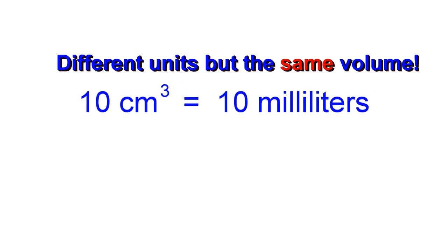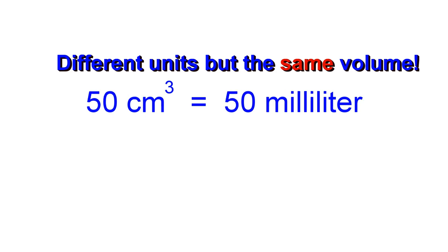So if you have a volume of 10 cubic centimeters, it will be equal to a volume of 10 milliliters. And if you have a volume of 50 cubic centimeters, it will equal a volume of 50 milliliters.